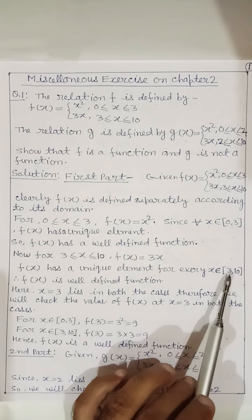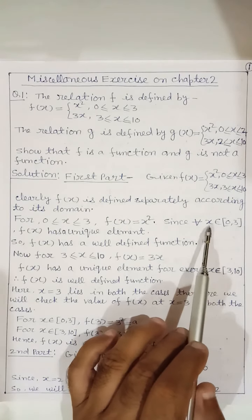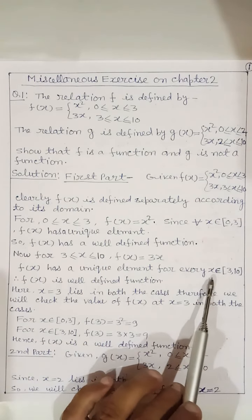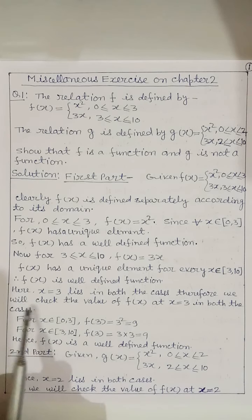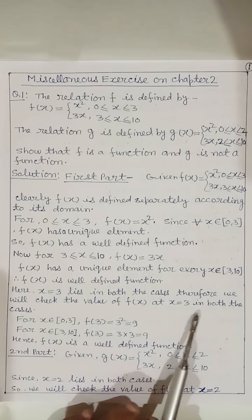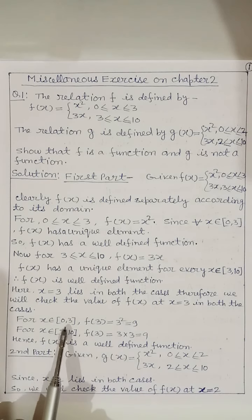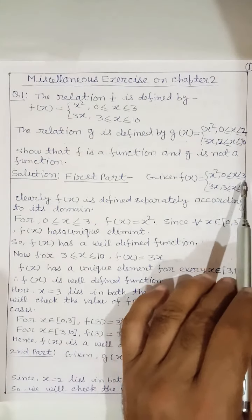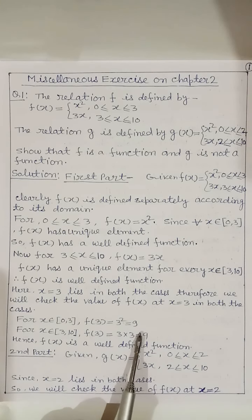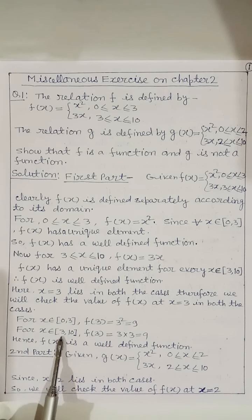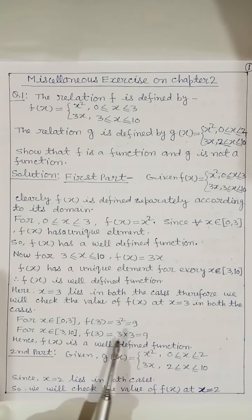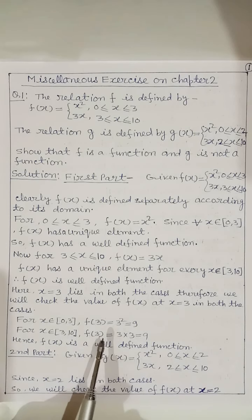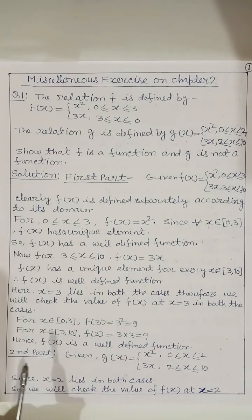Element 3 is common in both intervals: x ∈ [0, 3] and x ∈ [3, 10]. So we check the value of f(x) at x = 3 in both cases. For x ∈ [0, 3], f(x) = x², so f(3) = 3² = 9. For x ∈ [3, 10], f(x) = 3x, so f(3) = 3 × 3 = 9. Since element 3 also has a unique image, that is 9, hence f(x) is a well-defined function.